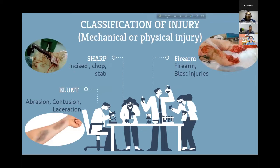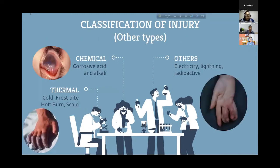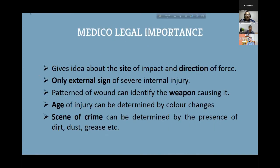Classification of injury in forensic medicine involves discussing both the weapon and the injury. A blunt weapon may cause abrasion, contusion, or laceration. A sharp weapon causes incised, chop, or stab injury. Firearms cause blast injuries. Thermal injuries include frostbite, hot burns, scalds, and chemical corrosives such as acid or alkali. Others include electricity or lightning.